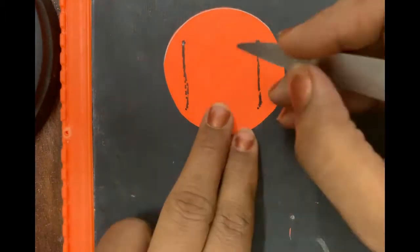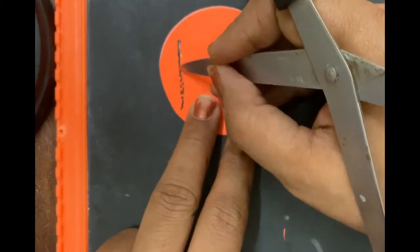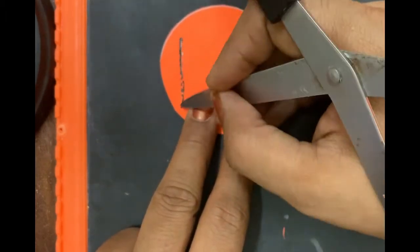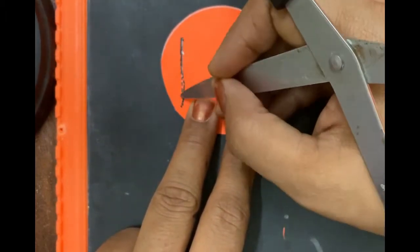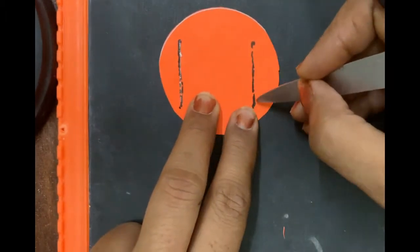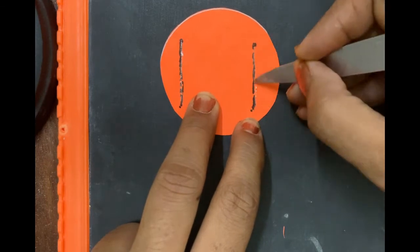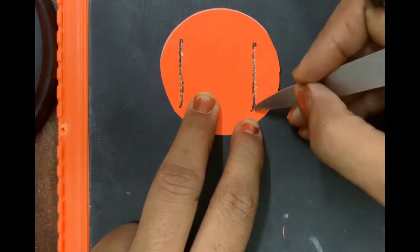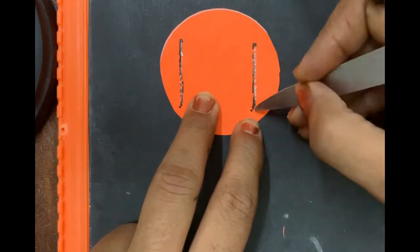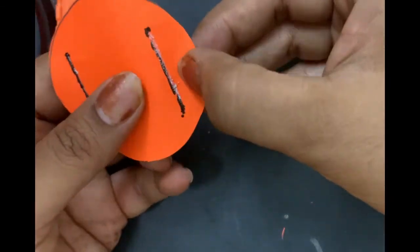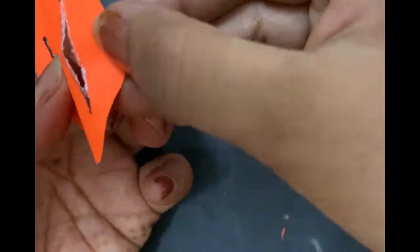Now this we have to cut. You can use scissors or you can use a pen. Slowly, slowly give a cut. It will cut. Be careful, do not cut it extra. Now here you have to insert your strip inside this.